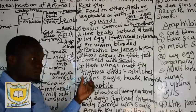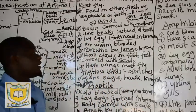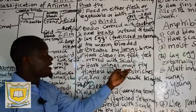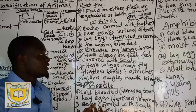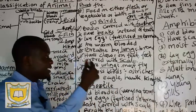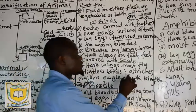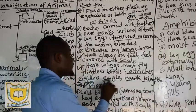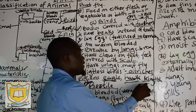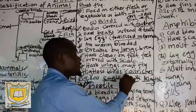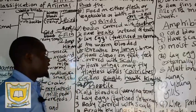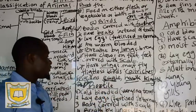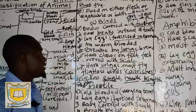Characteristic number seven: all birds have wings, which means they fly. Most birds fly, but we have those birds that do not fly — they are called flightless birds. An example of a flightless bird is the ostrich. Examples of birds that fly include the pigeon, eagle, hawk, and kingfisher. If somebody asks you to give examples of birds, we have pigeon, eagle, hawk, kingfisher, and chicken, among many others.